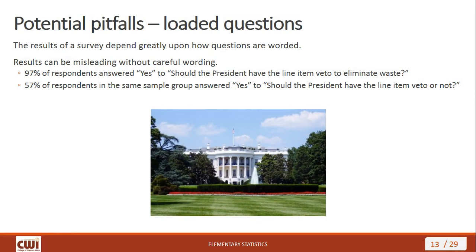How you word a question makes a big difference in the results you get. For example: 'Should the president have the line item veto to eliminate waste?' resulted in 97% saying yes. But when asked without that leading judgment — 'Should the president have the line item veto or not?' — the yes response dropped to 57%. That's a huge jump. You can totally introduce bias just by the way you word the question.